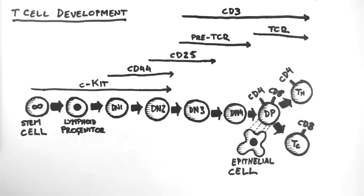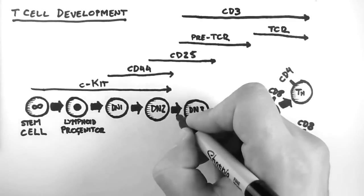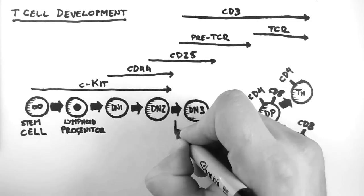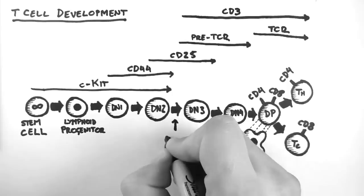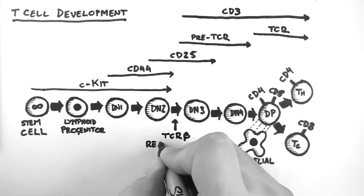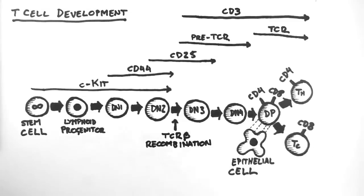However, instead of a heavy chain and a light chain, we have a beta chain and an alpha chain. The TCR beta chain is analogous to the BCR heavy chain and it rearranges first. This happens somewhere between the double negative 2 cell and the double negative 3 cell.